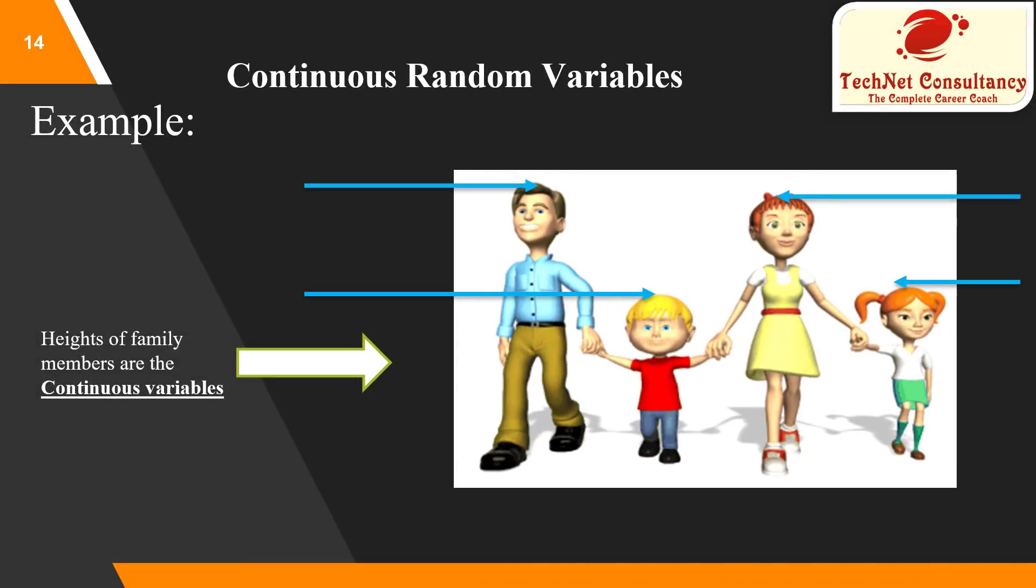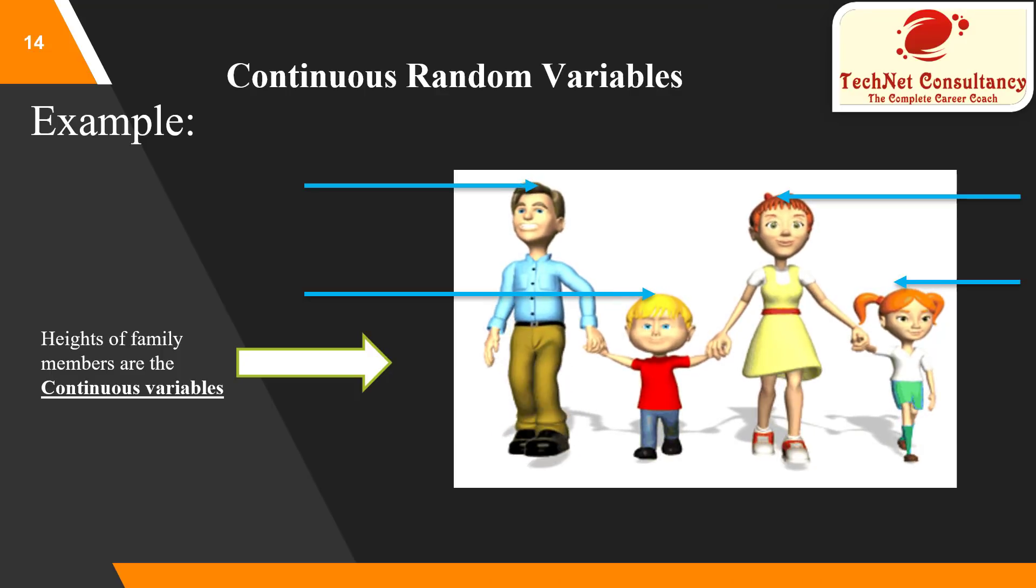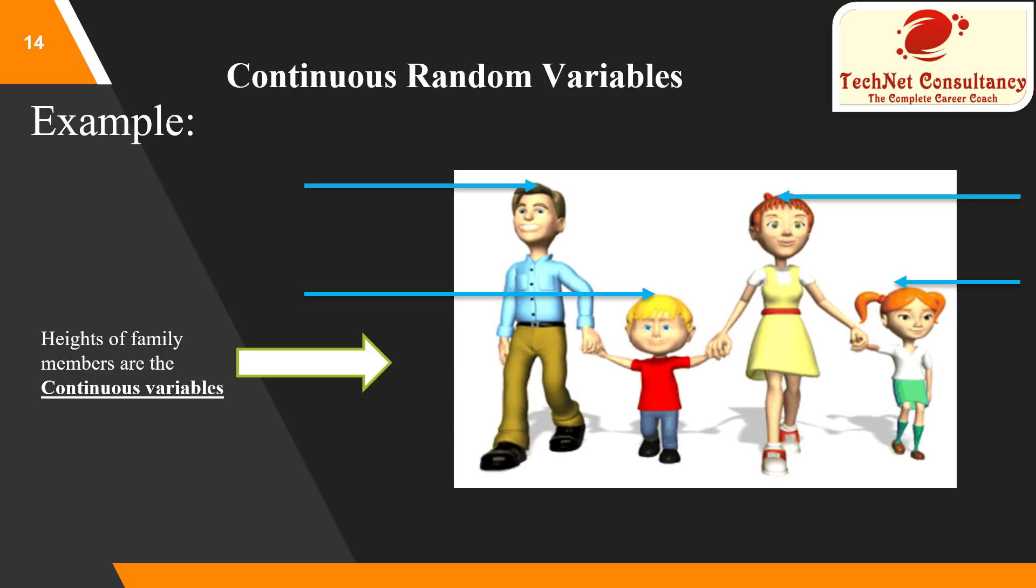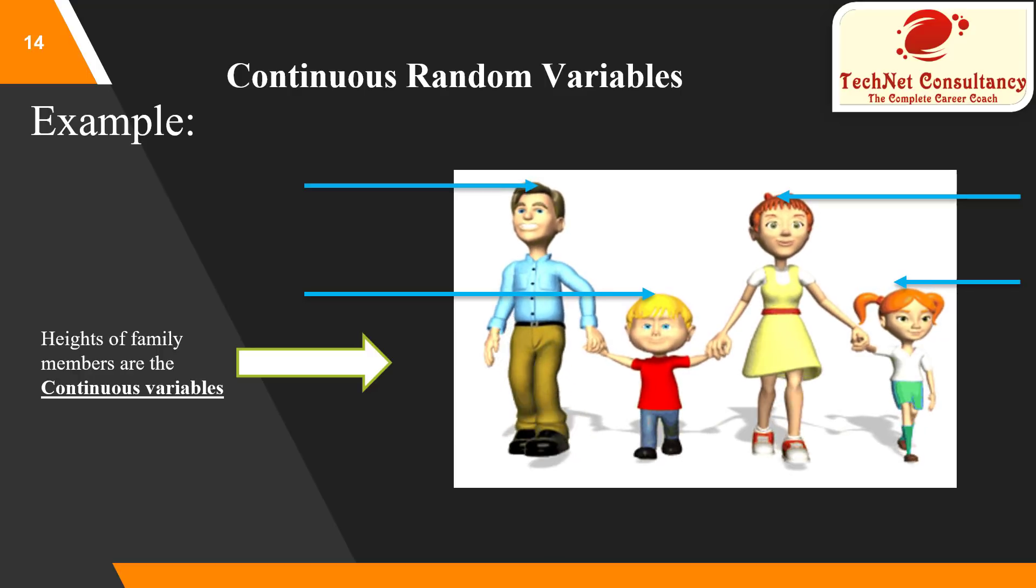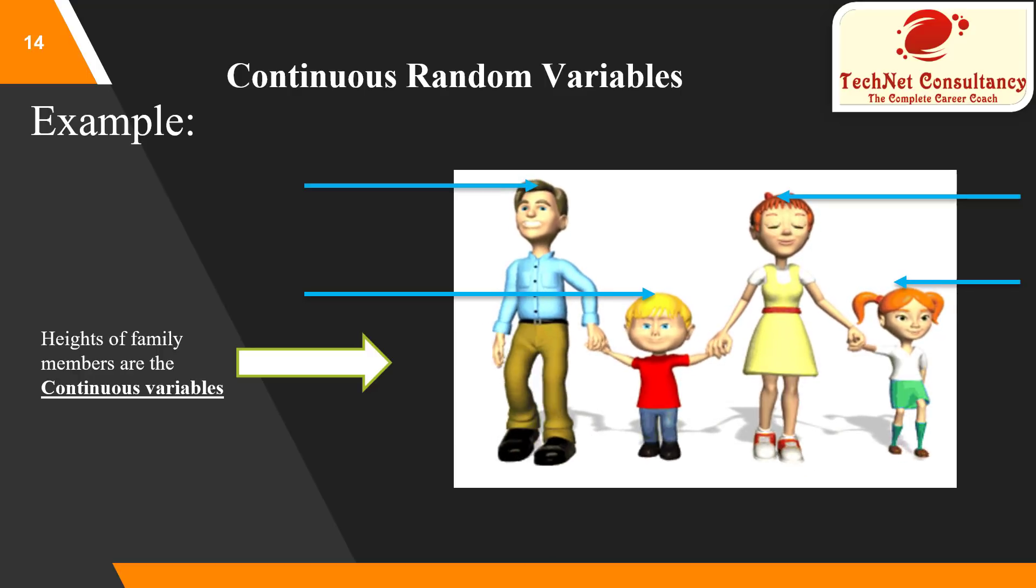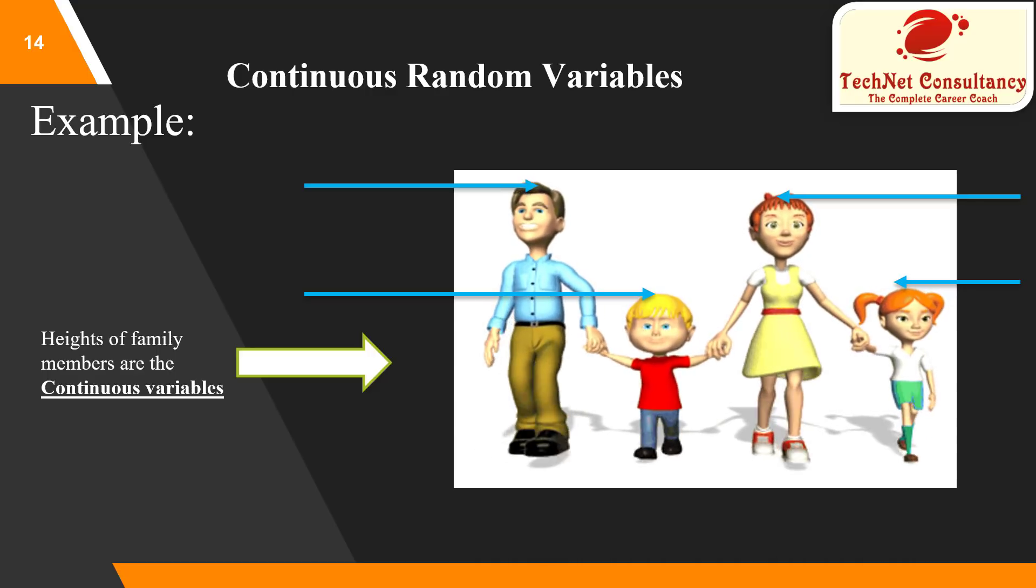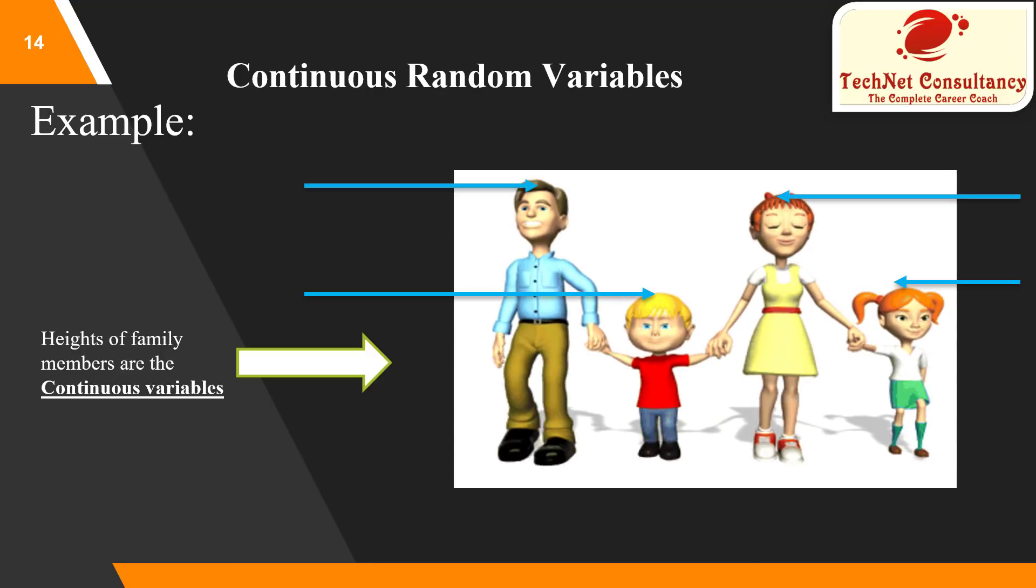For example, in this figure, the height of family members can be anything between some range like 4 to 6 feet or 5 to 7 feet. So, you can't say the height of all the family members is always a fixed number of feet.